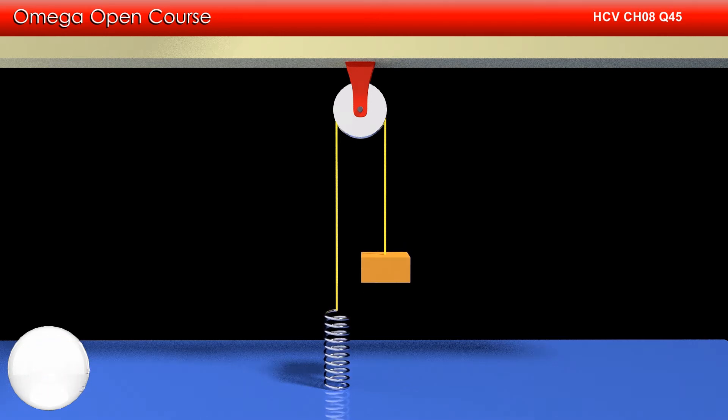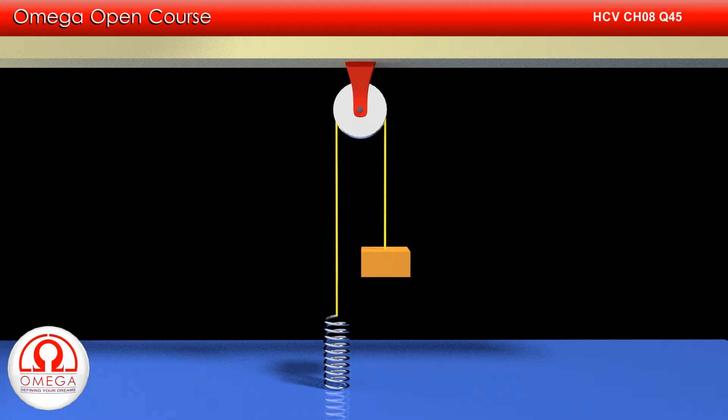After a few oscillations, it settles at its equilibrium position which is clearly above the lowest position of the block. This implies when the elongation of the spring is maximum, the block is not at equilibrium and hence forces are not balanced.